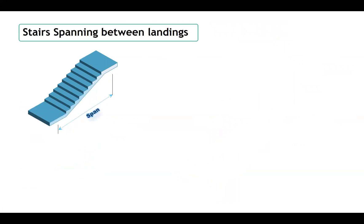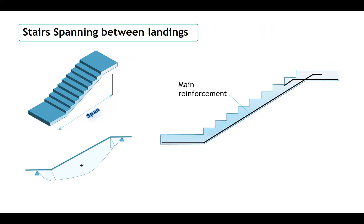The third type — stairs spanning between landings — has the flight supported directly on the landing with no separate beam; the landing works as a beam. The span is from the center line of one landing to the center line of the other, and the reinforcement is similar to the first case — bottom steel and transverse distribution steel. However, note that the landing carries higher loads and will have torsional stresses from the flights on both sides. Therefore, careful attention is needed in designing the landing, which will typically have stirrups and top-and-bottom steel reinforcement to resist torsional stresses.